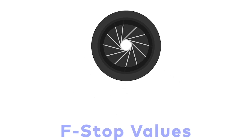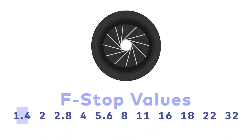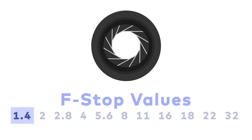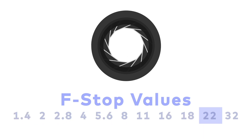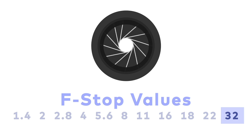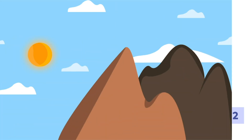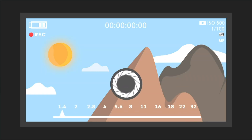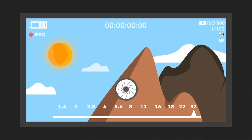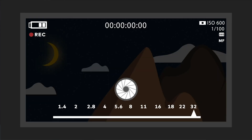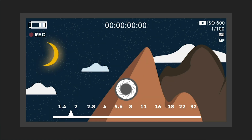To measure how to open or close the aperture we use a number system called f-stop values. The lower numbers like f1.4 represent a more open aperture, and the higher numbers like f32 represent a more closed aperture. In a bright space you want a more closed aperture — that means a higher f-stop. In a dark space you want to open up the aperture — that means a lower f-stop.